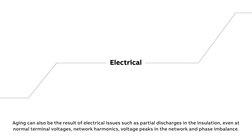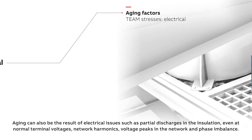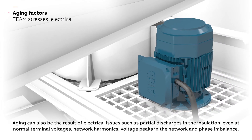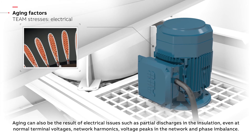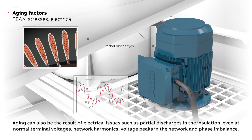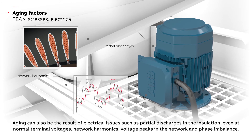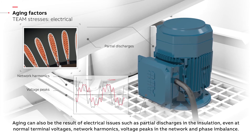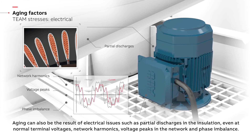Aging can also be the result of electrical issues such as partial discharges in the insulation, even at normal terminal voltages, network harmonics, voltage peaks in the network, and phase imbalance.